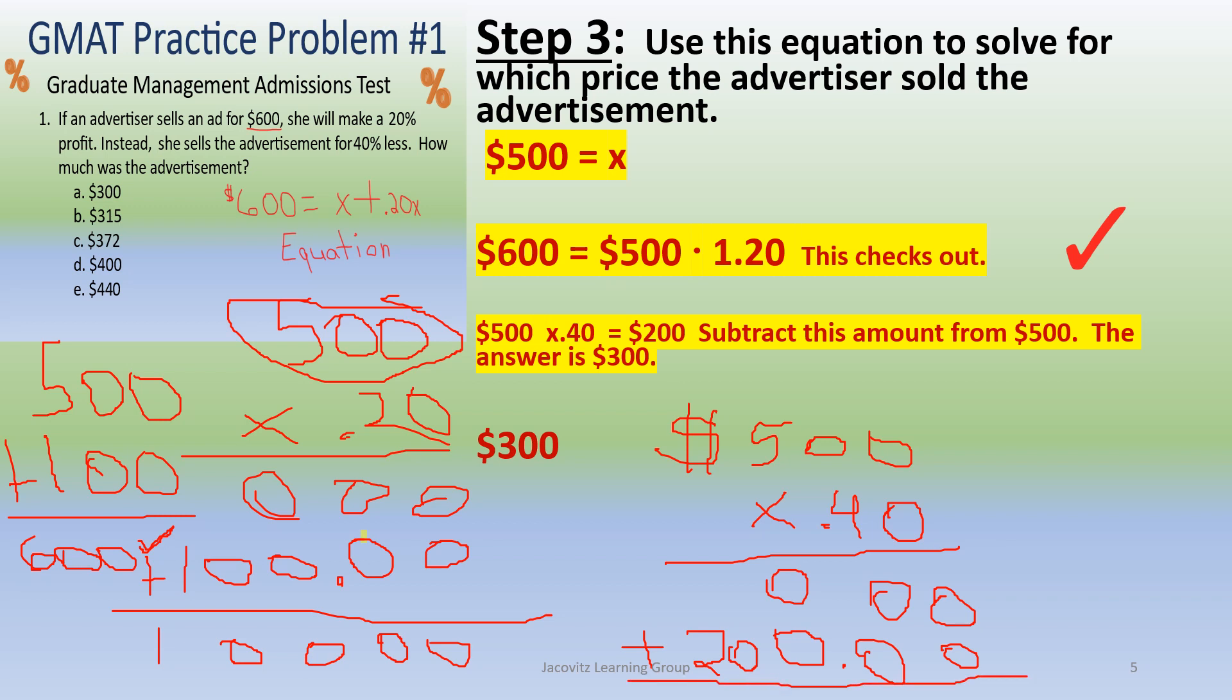Now, here's the situation. You don't have 200 as a choice. And in this case, that's very fortunate because a lot of times, as a distractor, 200 would be put here. But here's what you have to do with this equation. Since you had $200, you had to subtract this 200 from $500, and that's going to give you your answer, which is now going to be $300.